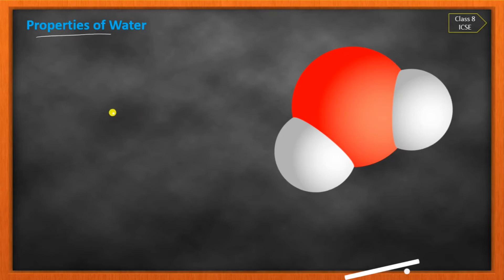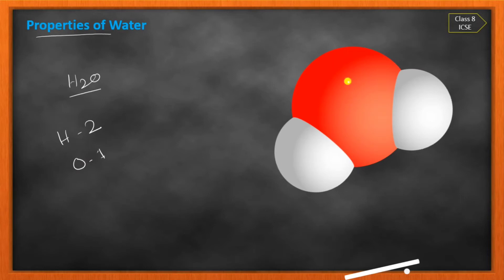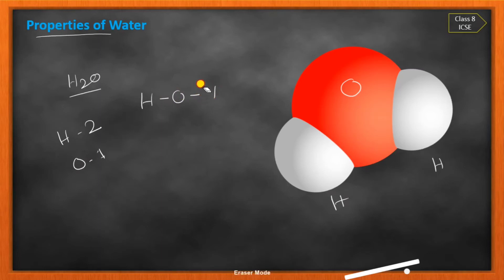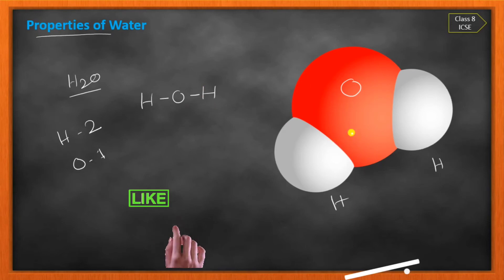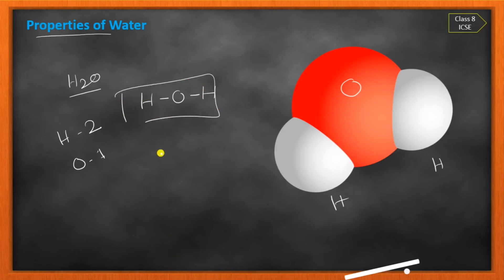Now let's discuss the properties of water. Before discussing properties, we will first look at the structure of water. Water is H2O — two hydrogen atoms and one oxygen atom. You can see the structure here: this is oxygen and these are the two hydrogen atoms. There is a single covalent bond between hydrogen and oxygen.